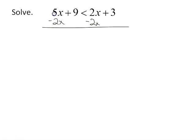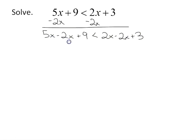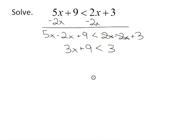That gives me 5x minus 2x plus 9 is less than 2x minus 2x plus 3. Collecting the x terms together: 5x minus 2x is 3x on the left side. On the right side, 2x minus 2x is 0, so I have 3 on the right side. So now I have 3x plus 9 is less than 3.